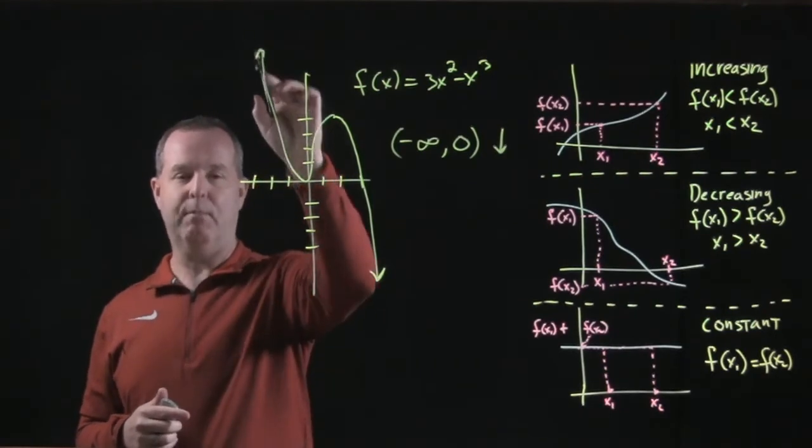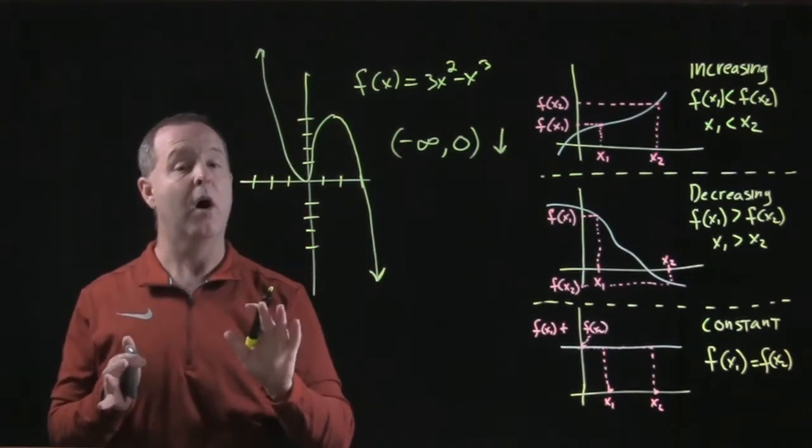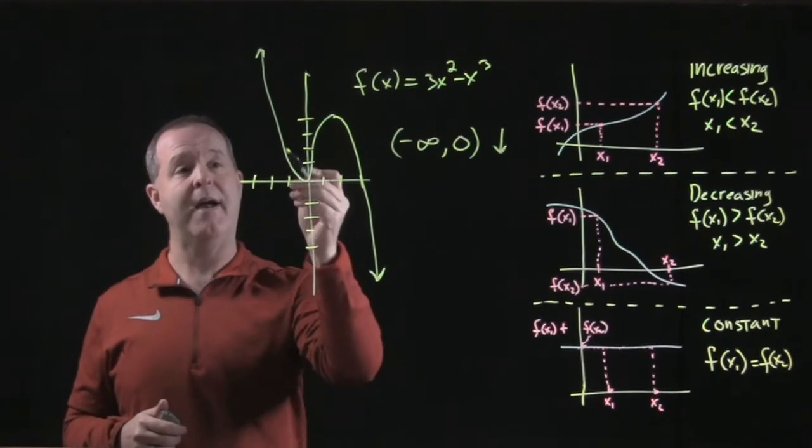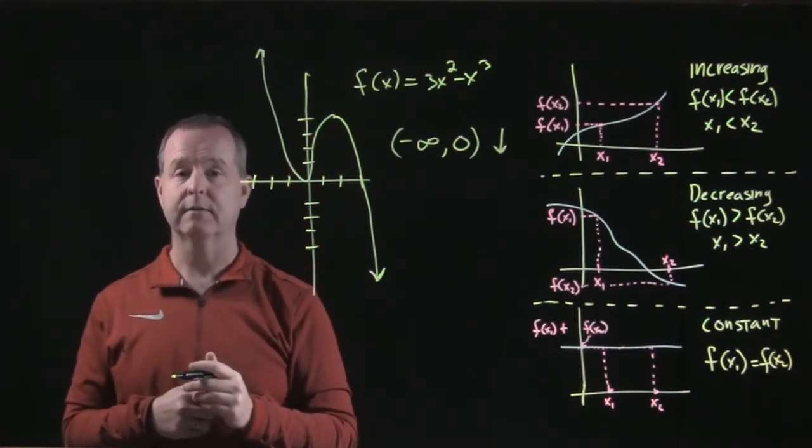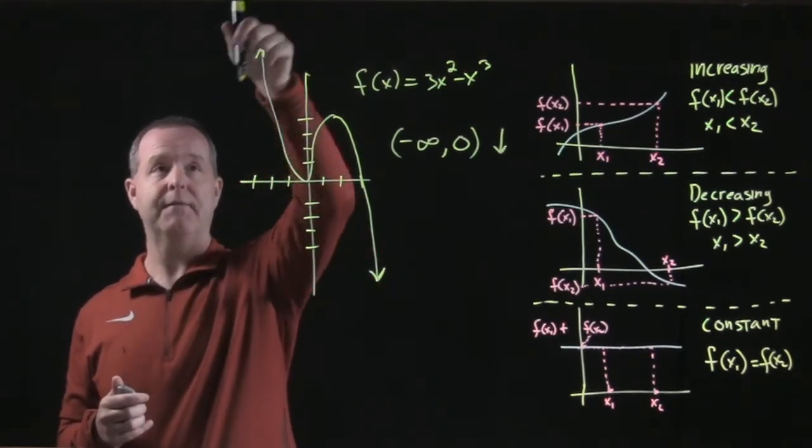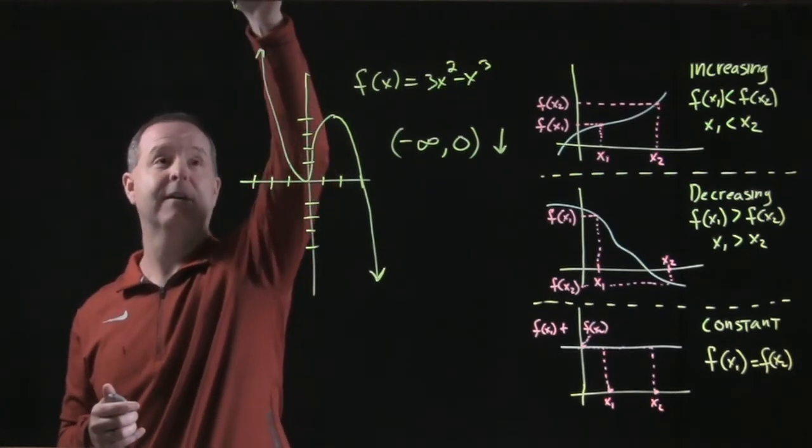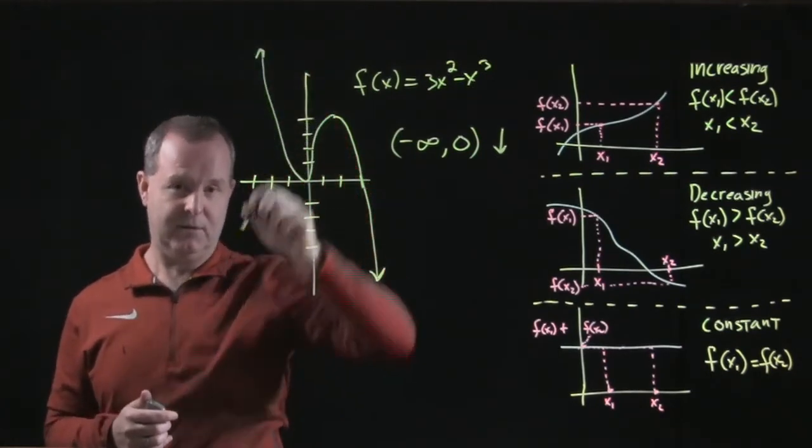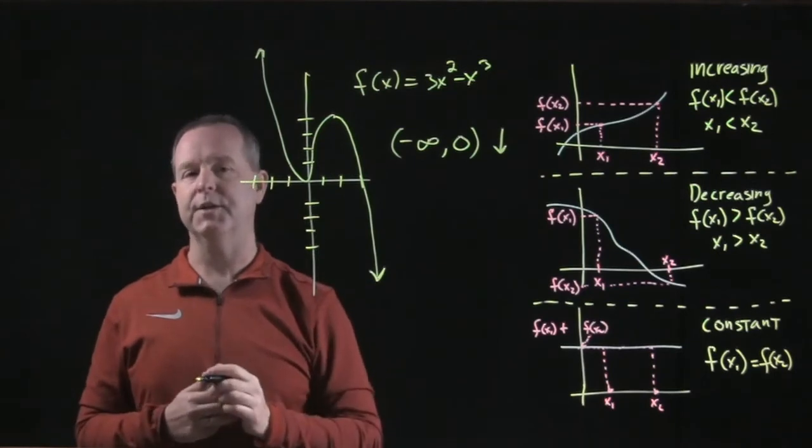Even though I have an arrow pointed up in that direction, remember, all that arrow is telling me is that graph continues on in that direction forever. But as I'm going left to right, it's coming from forever down towards zero. At zero, it changes direction.